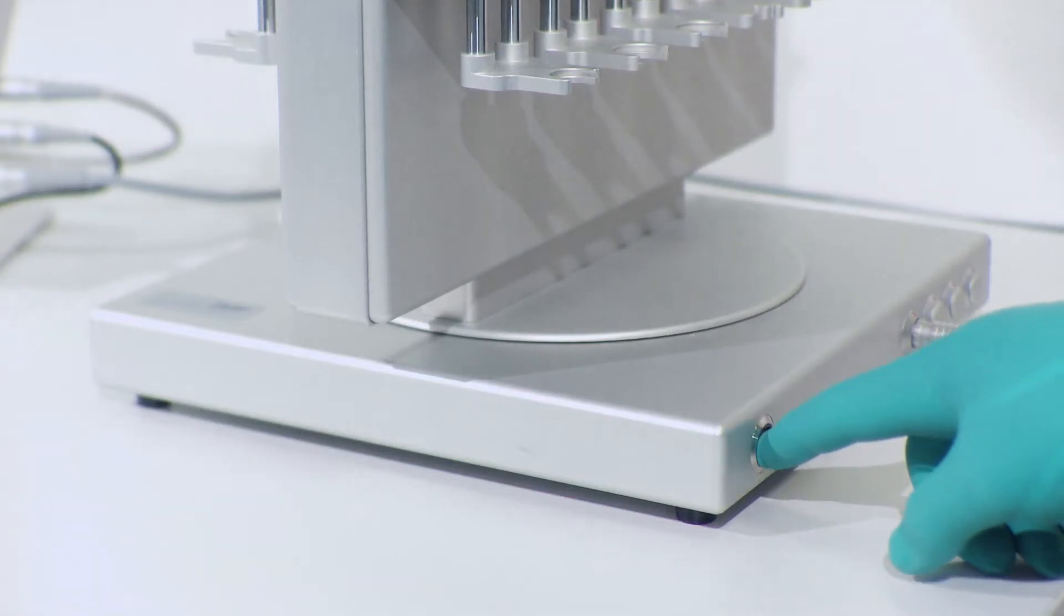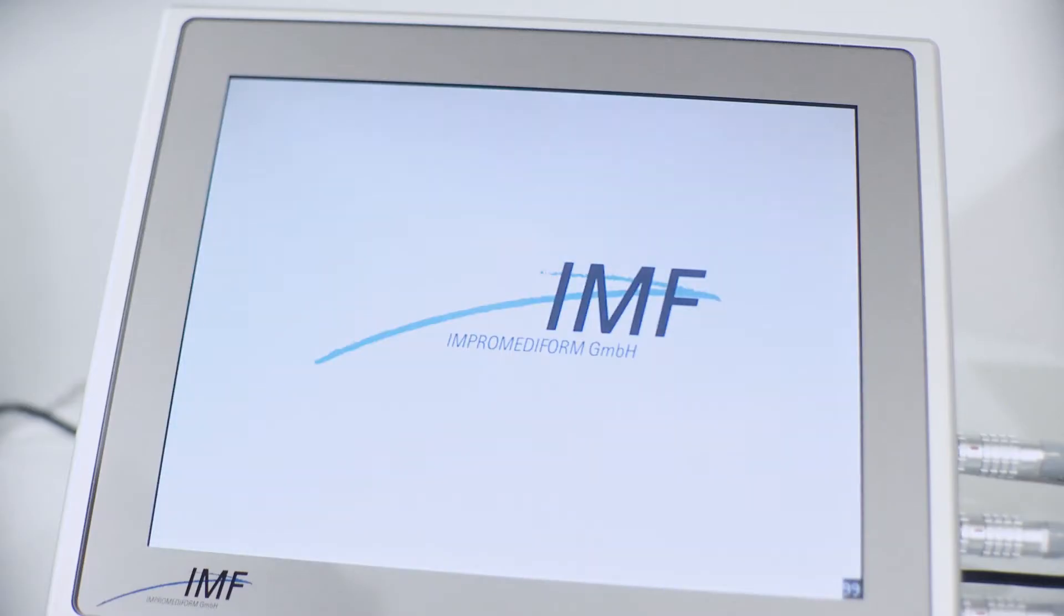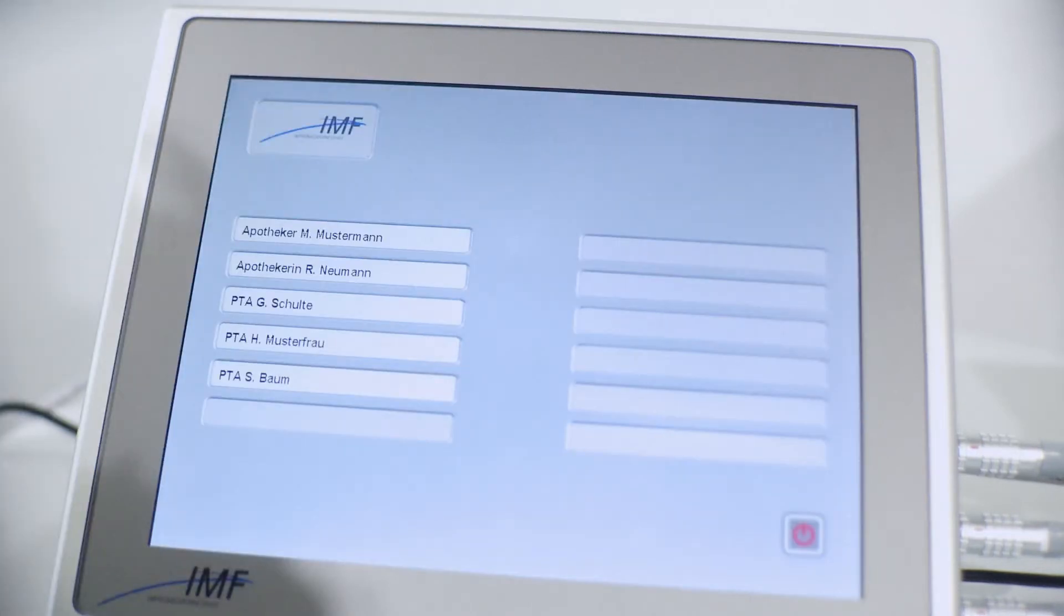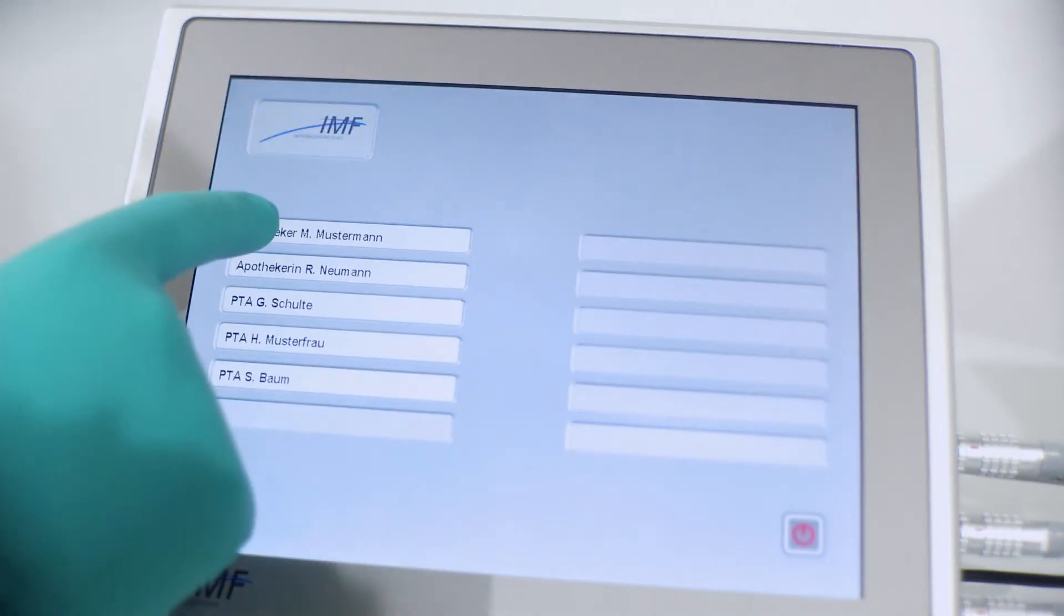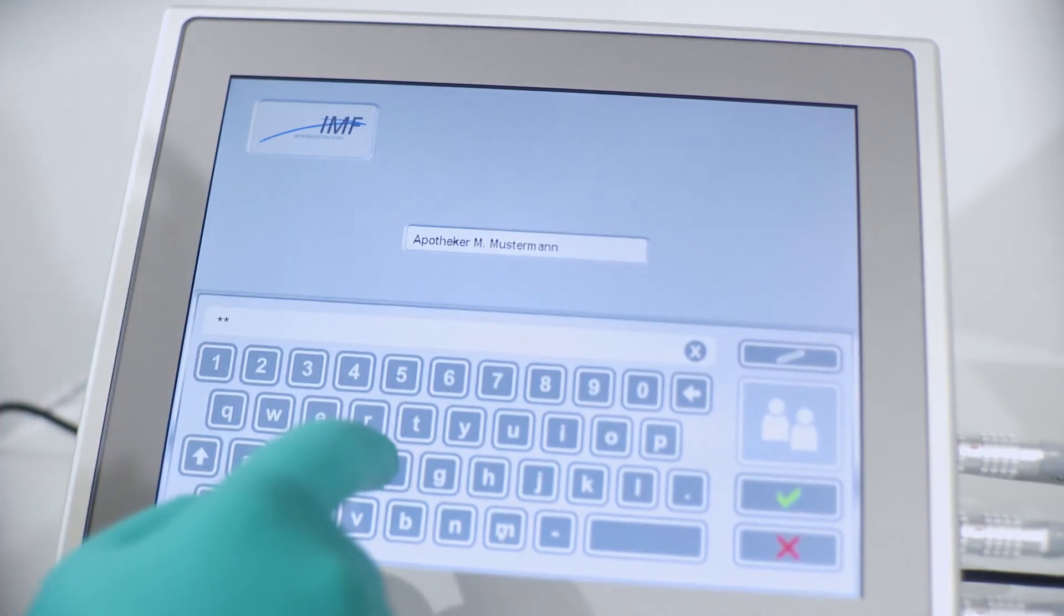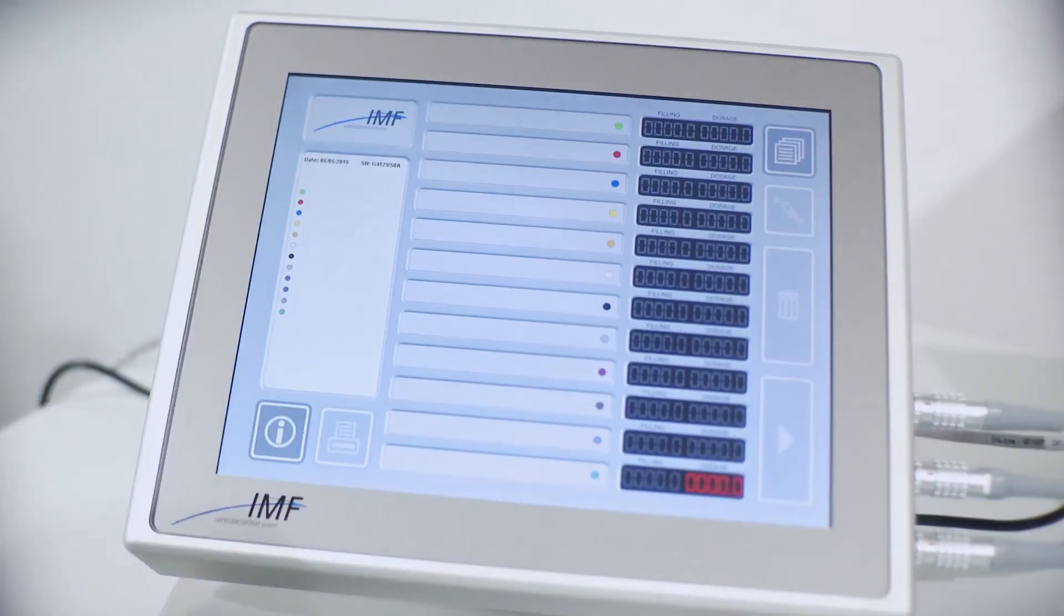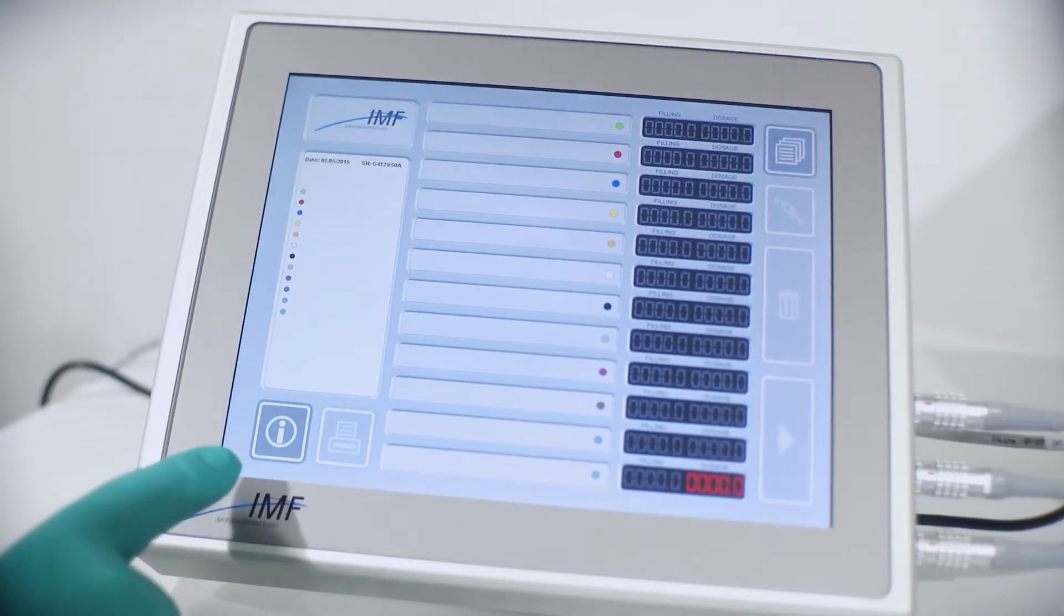To start the compounder simply press the power button. The IMF logo will light up and so will the touchscreen. Once the starting process is completed the touchscreen will pop up with a login page information. Each username is password protected. There are preset user levels to facilitate the access for basic operators, trained operators and administrators.